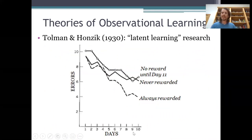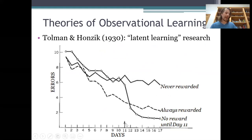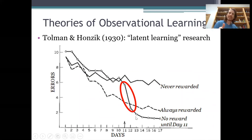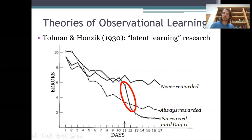For the first 10 days, the always-rewarded rats showed the biggest improvement in performance, going from an average of nine or ten errors on day one down to about four on day 10. Rats in the other two groups showed some improvement but not as much. However, look at what happened after day 11, when food was added for the rats in the second group — there was a huge drop in errors from day 11 to day 12. It was as if, as soon as they thought there might be food waiting at the end, those rats started navigating the maze just as accurately as the rats that had been getting rewarded the whole time.